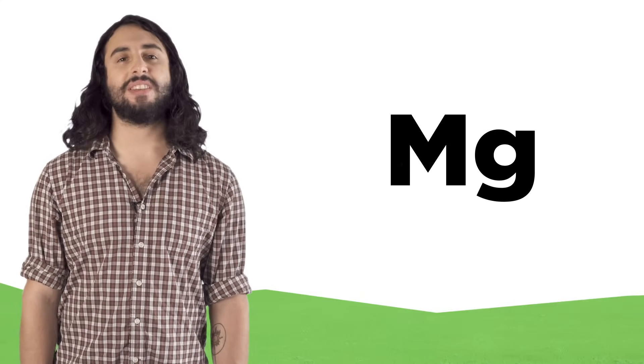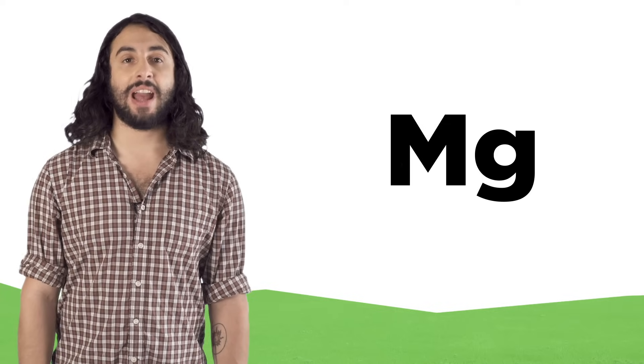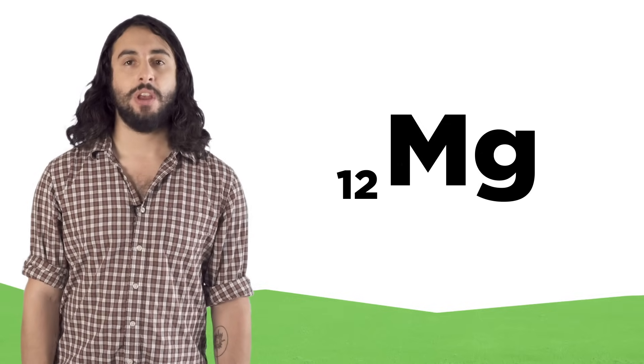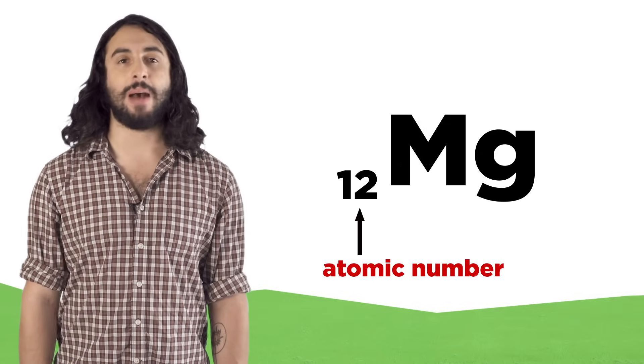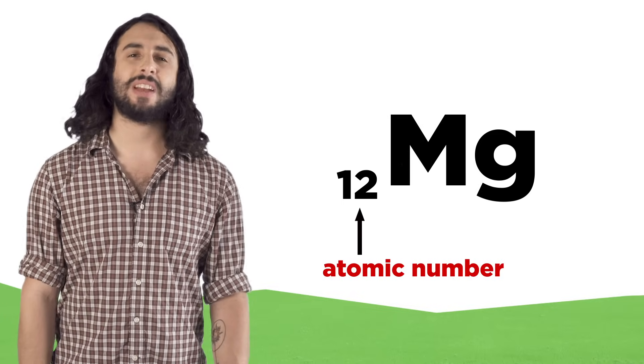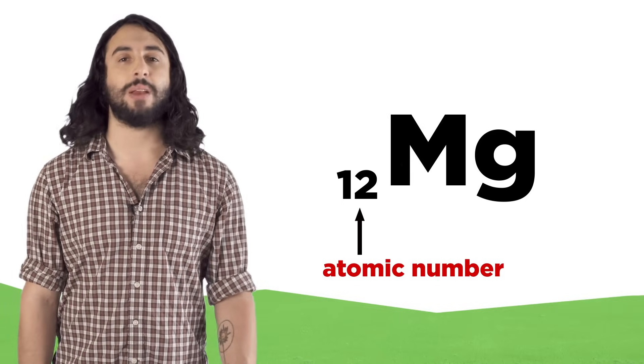When we represent an atom, we use a nuclide symbol. This will consist of one or two letters that abbreviate the element. If one letter, it's capitalized. If two, the first is capitalized and the second is not. To the bottom left we sometimes put the atomic number, which is the number of protons in the nucleus. This is kind of redundant because the type of element implies the number of protons, but sometimes we do it anyway.